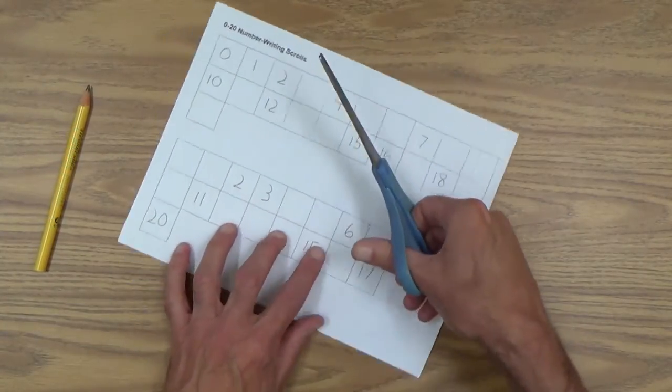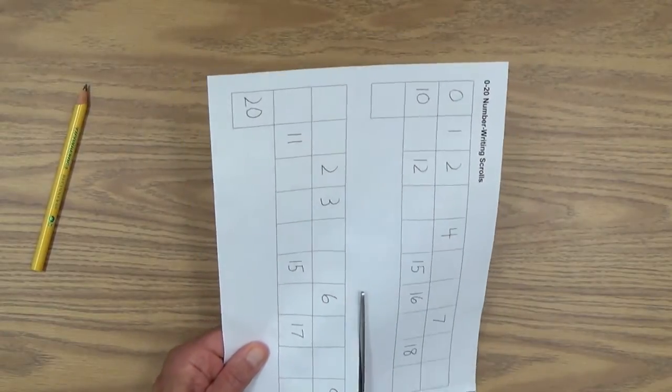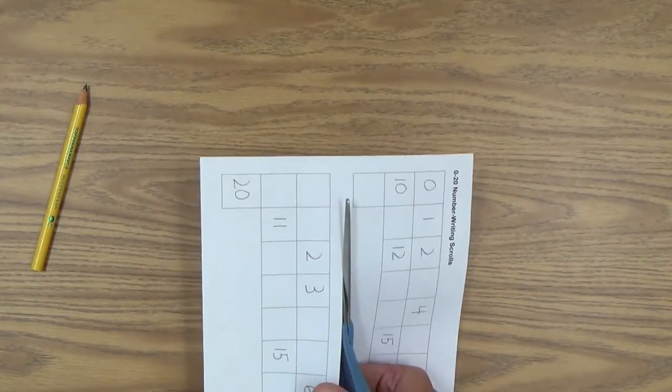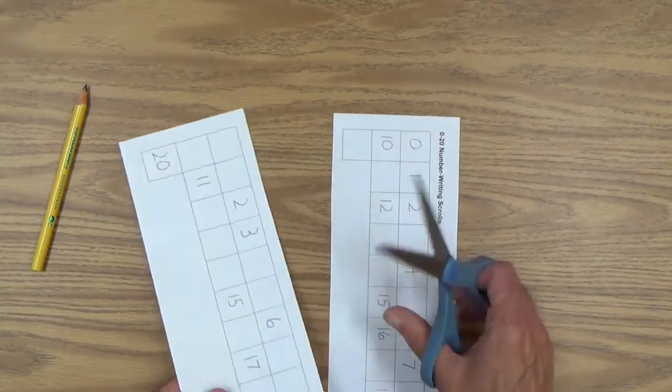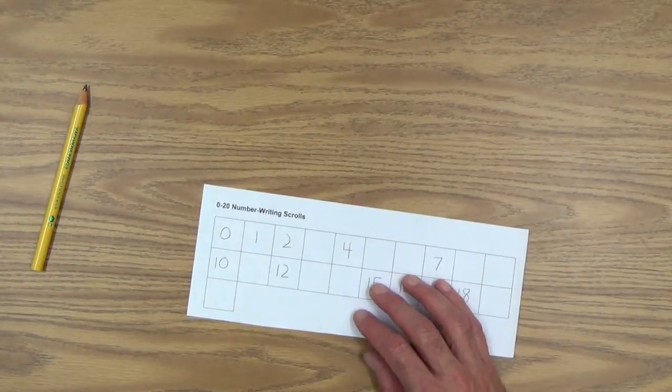You want to take a scissors and let's just separate these so there's no confusion that your child might be copying. This is not a copying exercise.